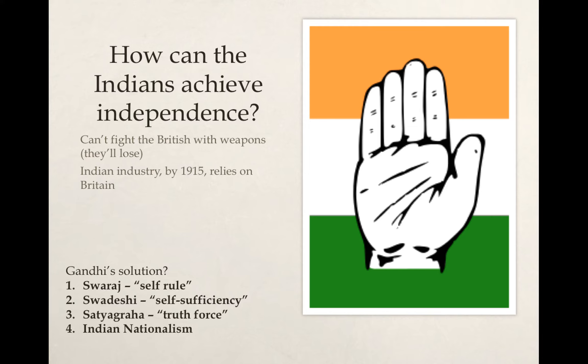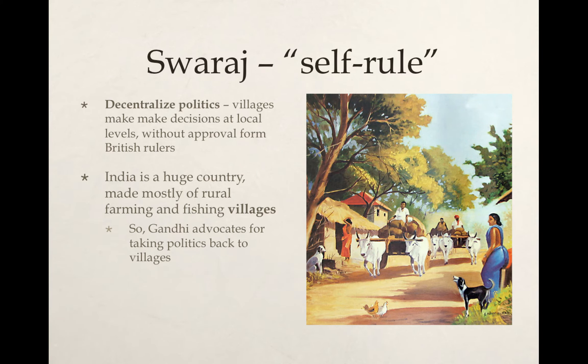So Gandhi actually came up with four particular methods of achieving independence. The first was Swaraj, or self-rule. The second one was Swadeshi, or self-sufficiency. The third one was Satyagraha, or truth force. And the fourth one was really Indian nationalism.